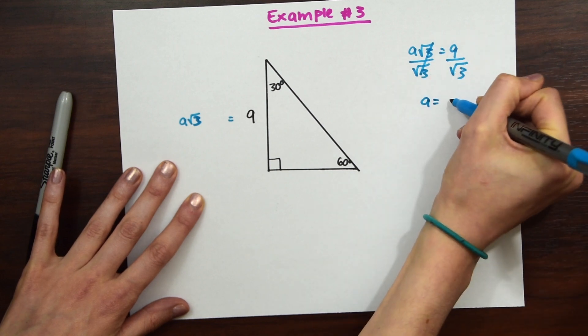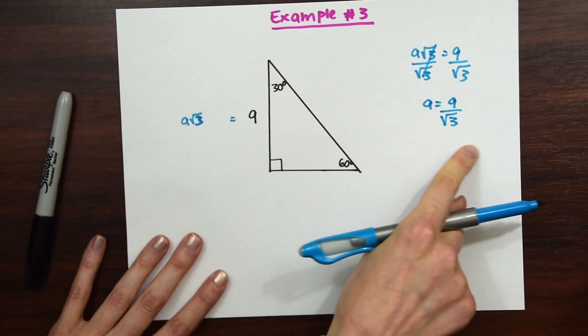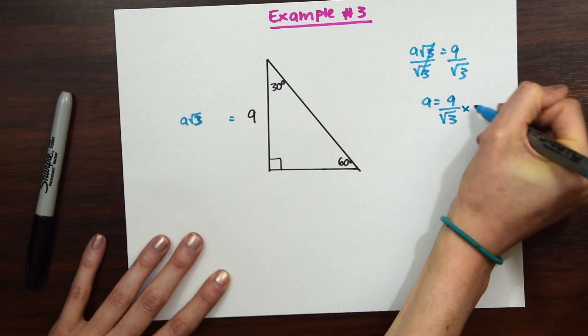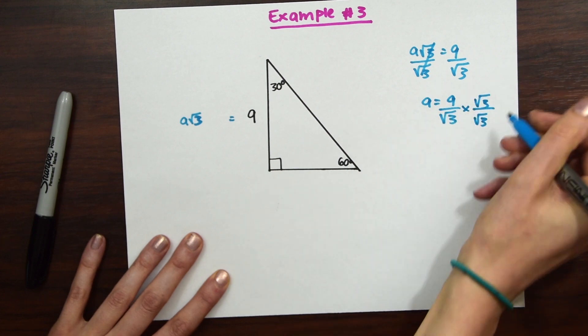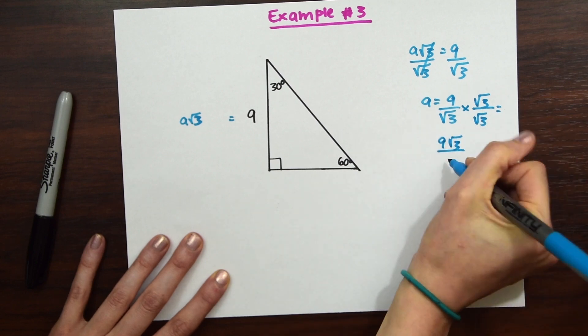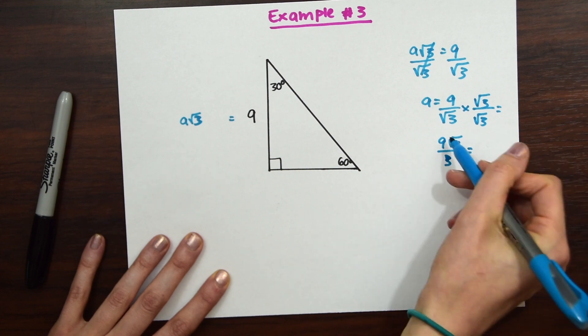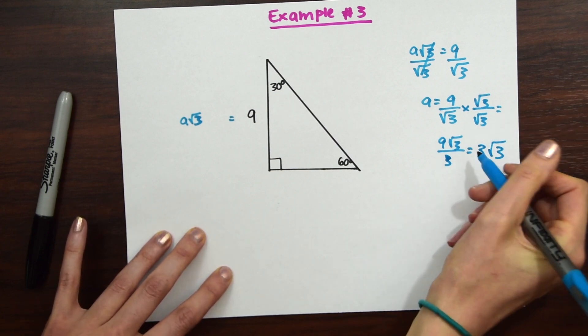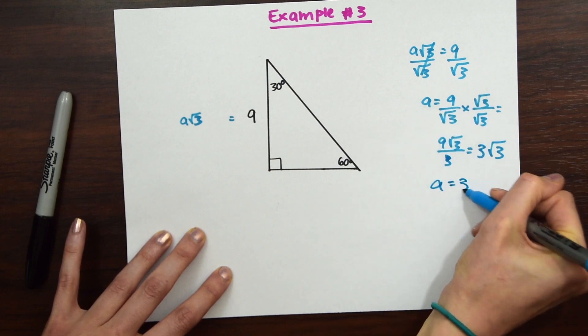These cancel each other out, and we're left with A is equal to 9 over rad 3. So you could leave it like that, or some people don't want to have radicals in the denominator, so we're going to want to rationalize this answer. So to do that, we're just going to multiply the radical rad 3 to the numerator and the denominator. And when we do that, we're left with 9 rad 3 over 3, and then this can be simplified even further. 9 divided by 3, they're just dividing those whole numbers. 9 divided by 3 is 3 rad 3. So this is all equal to A.